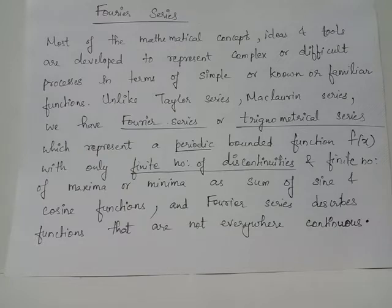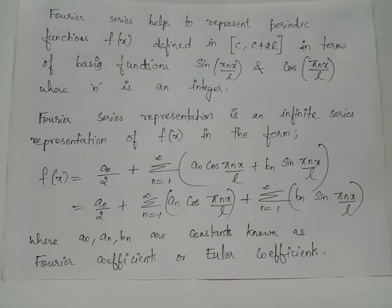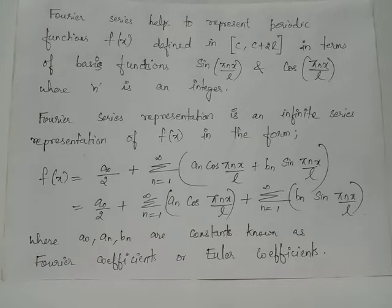Suppose you have a function f(x) which has a finite number of discontinuities and a finite number of maxima or minima, and f(x) is a periodic as well as bounded function. Then we can have a Fourier series expansion for f(x). Suppose our periodic function f(x) is defined for the interval [c, c+2l].